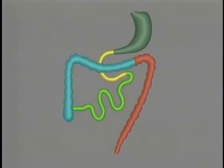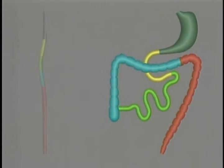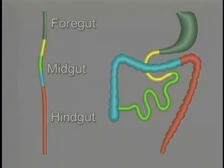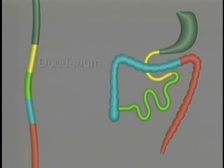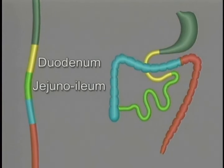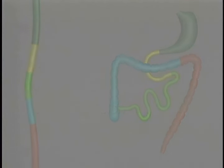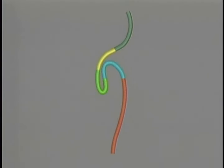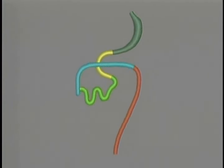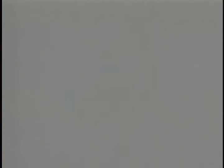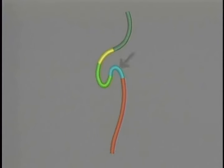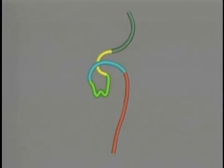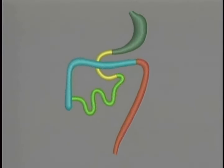The GI tract, which ends up like this, starts out as a straight tube consisting of the foregut, the hindgut, and the midgut. The midgut will become most of the duodenum, the jejunoileum, and the proximal colon. In the course of development, the midgut forms a loop that twists counterclockwise on itself, ending up like this. In the course of this rotation, the part of the loop that becomes the proximal colon passes in front of the part that forms the duodenum — and that's the way we find it in the adult.